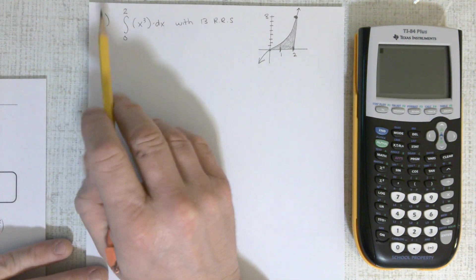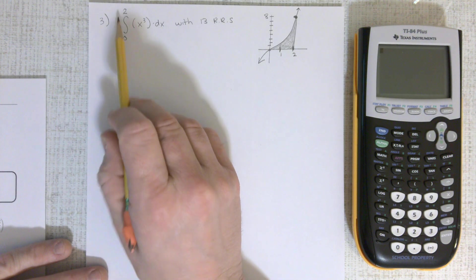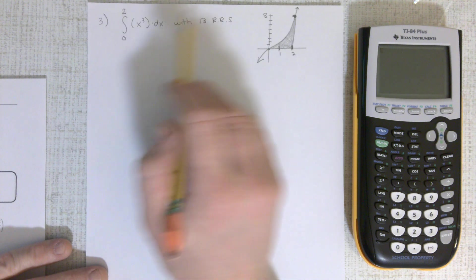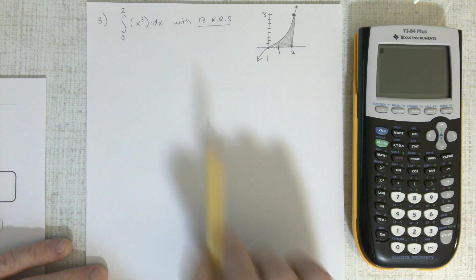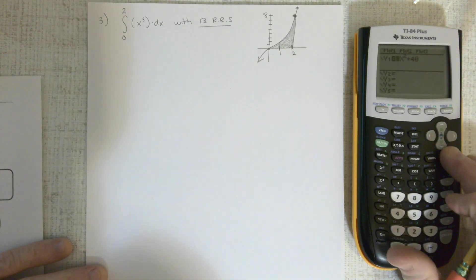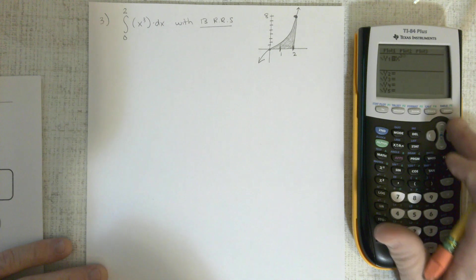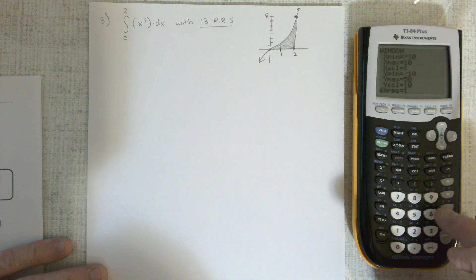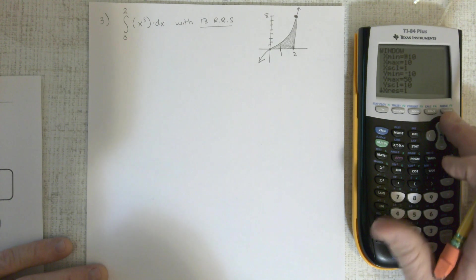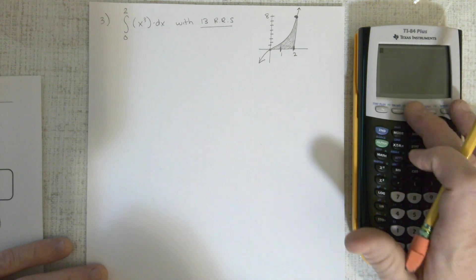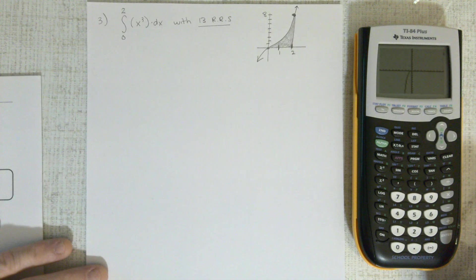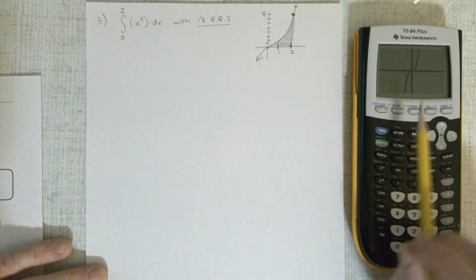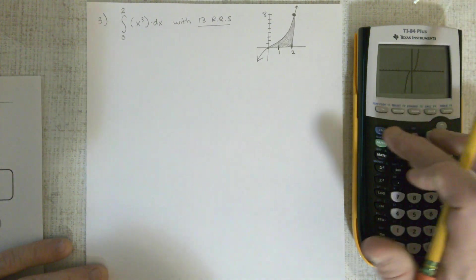Problem number three asks us to find the area from zero to two of this function with 13 right rectangles. So I have that right there, made a graph of them. I'm going to put it on my calculator too. There's the graph. Let's just hit Zoom standard. And there's the graph. And we're going to graph from one to two, find that area.